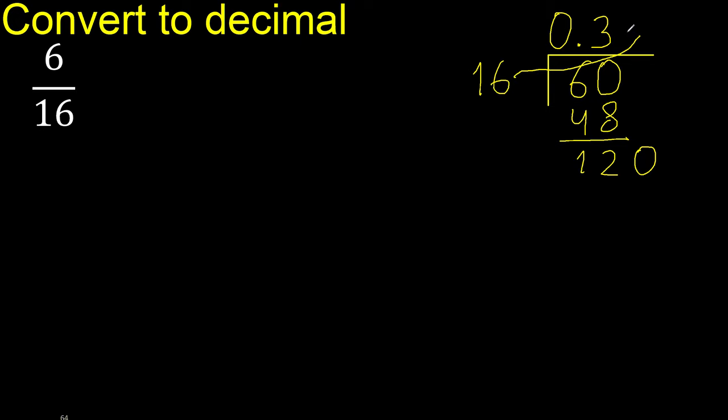16 multiplied by what number is nearest to 120? Multiplied by 8 is excessive. Multiplied by 7 is 112. Subtract is 8. Complete.